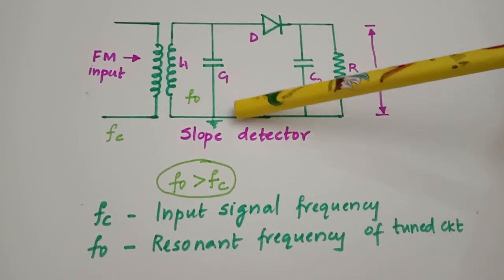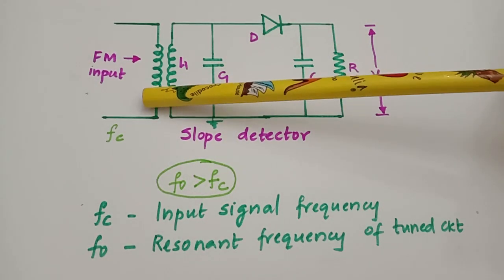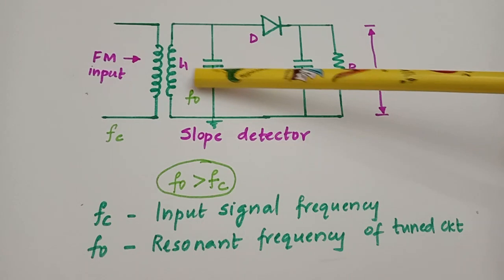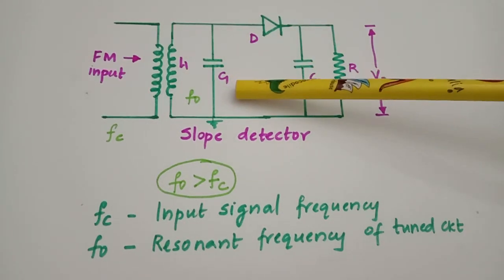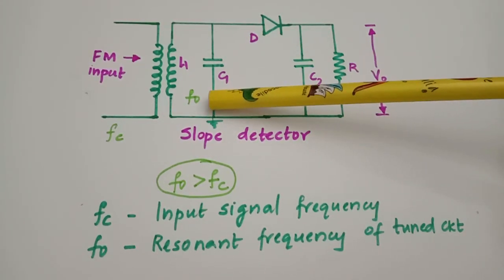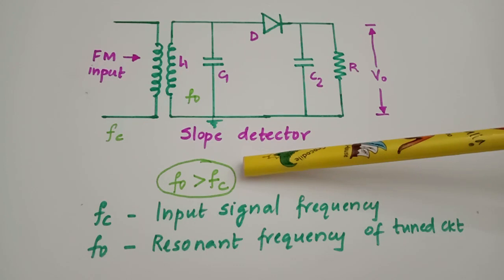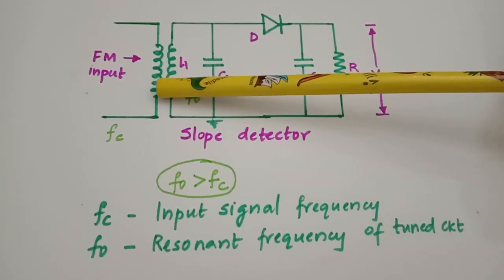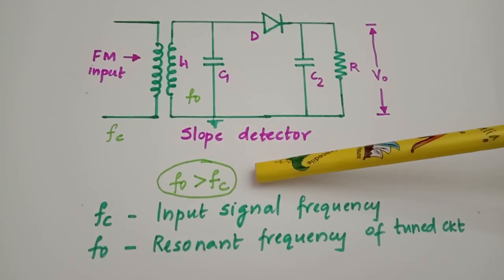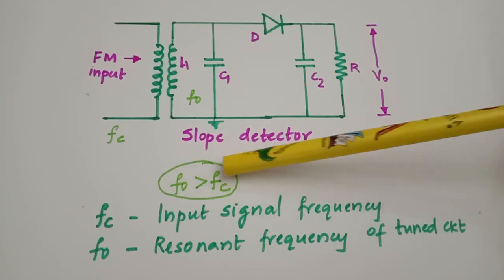This detector is called a slope detector, and we shall discuss the reason for that shortly. The input is the frequency modulated signal, and there is a tank circuit made by the secondary of the transformer and a capacitor. This tank circuit has been tuned so that its resonant frequency F0 is greater than the incoming signal frequency. This is something we must remember in the case of a slope detector.